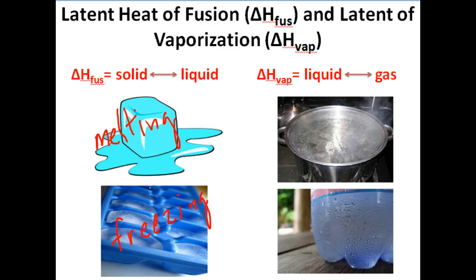Latent heat of fusion is the amount of energy it takes to turn a solid into a liquid or a liquid back into a solid. So when we're discussing heat of fusion, we're looking at the amounts of energy that are absorbed or released by substances as they change states of matter from solid to liquid or liquid to solid.